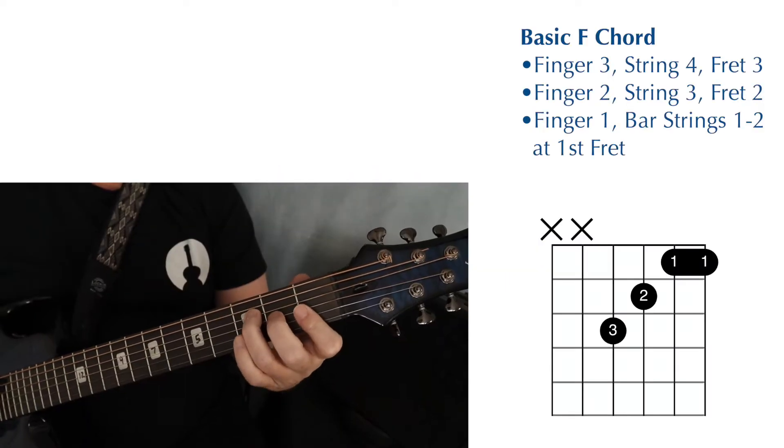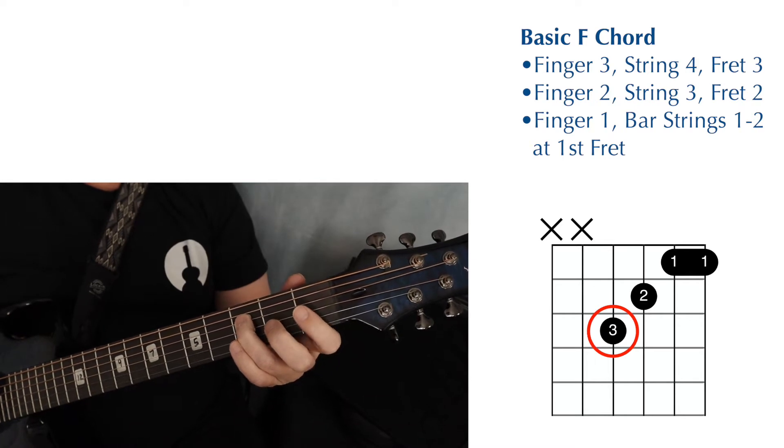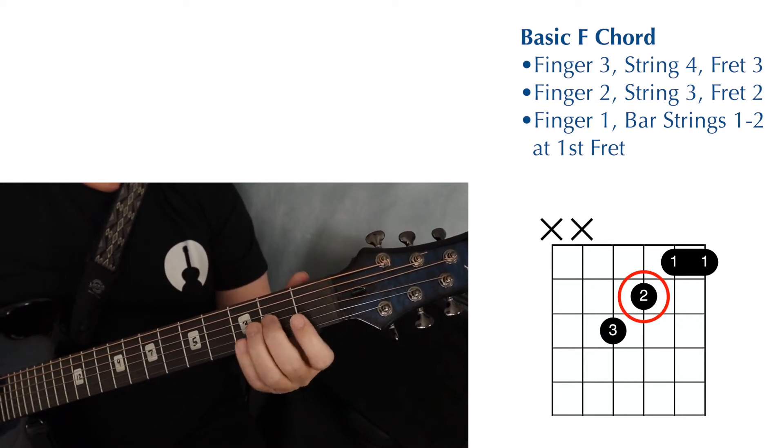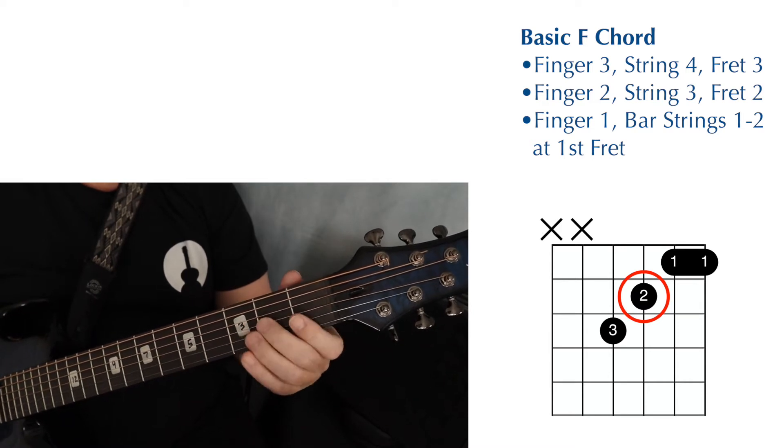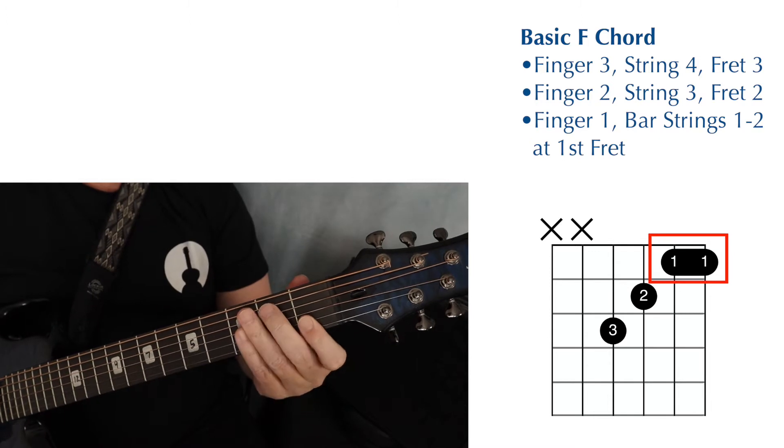Here's the F chord we're working toward. Third finger on string four, fret three. Second finger on string three, fret two. And first finger is barring at the first fret strings one and two.